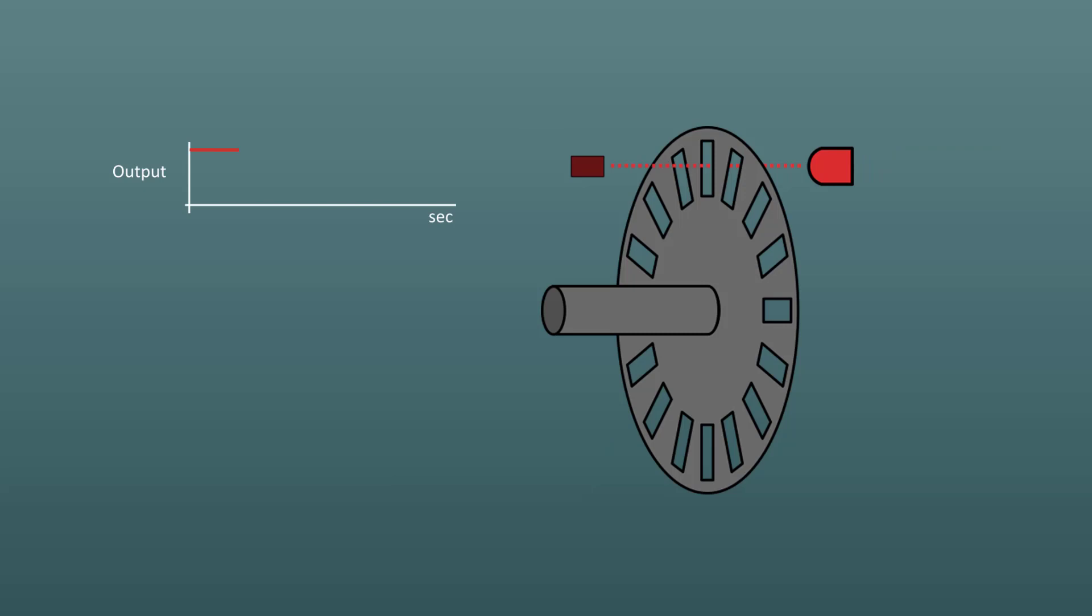As the object moves, the grating blocks or allows light to pass between the LED and the phototransistor. The resulting output from the phototransistor is a series of pulses. The microcontroller counts the pulses and, knowing the angle between each grating slit, it can calculate the rotation of the grating.